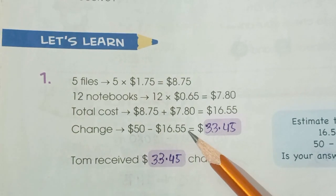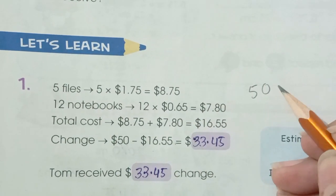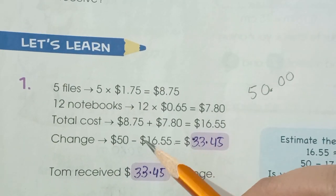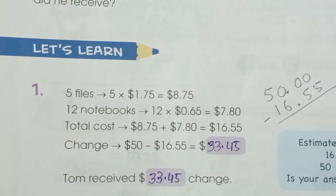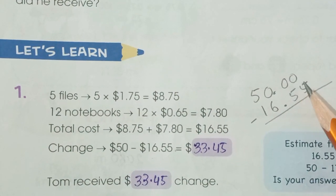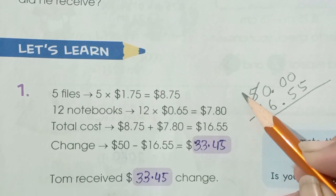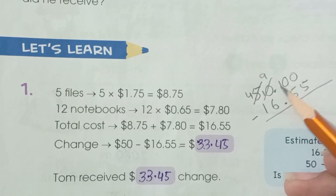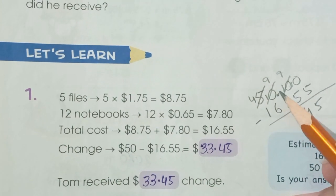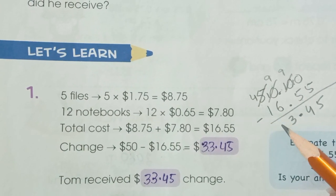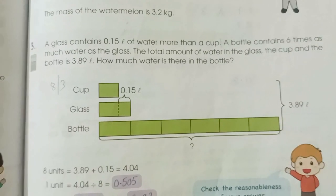We subtract $50 minus $16.55. We balance the number: 50.00 minus 16.55. We cannot subtract 0 from 5 or 0 from 6, so we use the borrow method. After borrowing: 10 minus 5 is 5, 9 minus 5 is 4, 9 minus 6 is 3, 4 minus 1 is 3. The answer is $33.45.